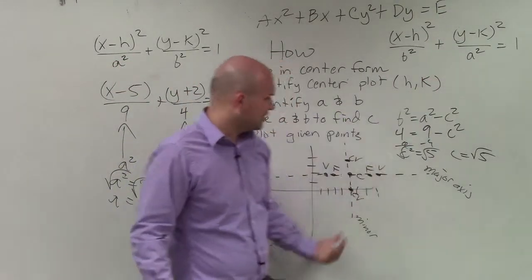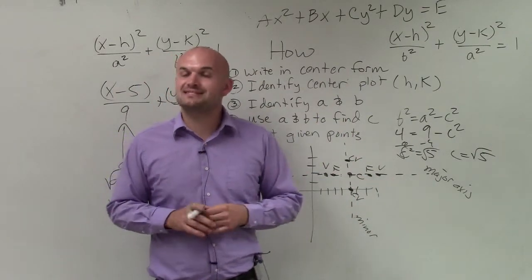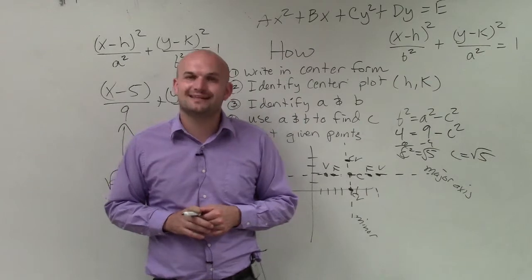Again, if my major axis was vertical, then I'd do the same thing going up and down. So there you go, ladies and gentlemen. That is the basic steps to graphing an ellipse. Thanks.